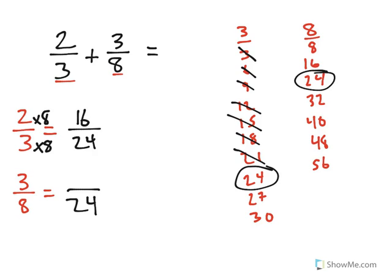Now we'll do the same process for 3/8. How did I go from 8 to 24 with multiplication? 8 times 3 is 24, so I need to multiply the top by 3 as well. 3 times 3 is 9.